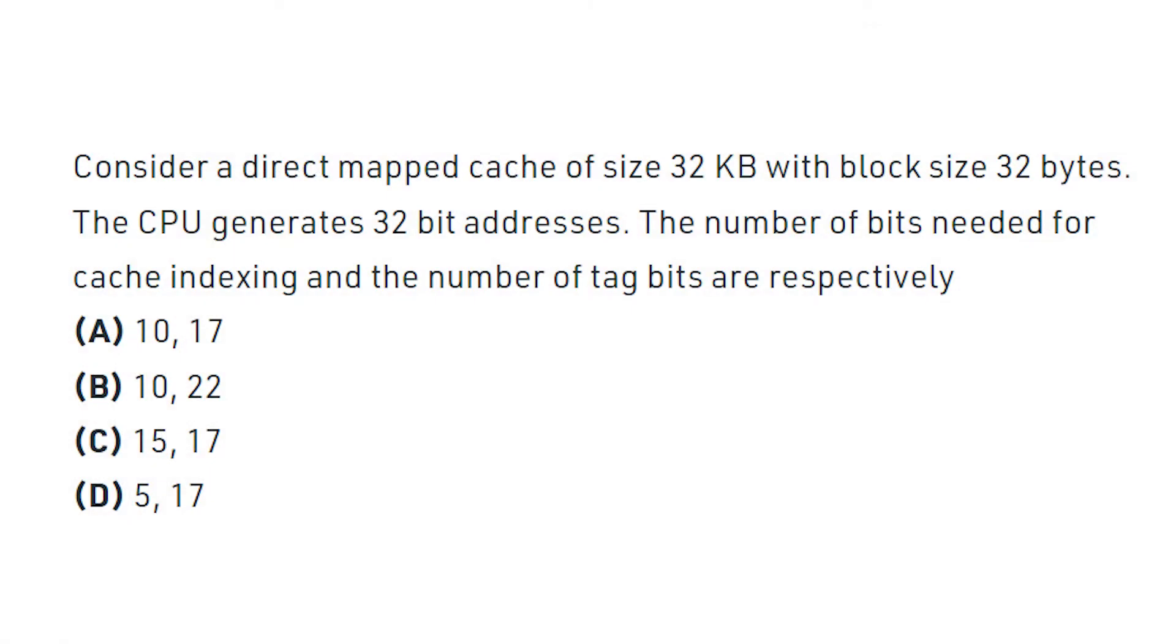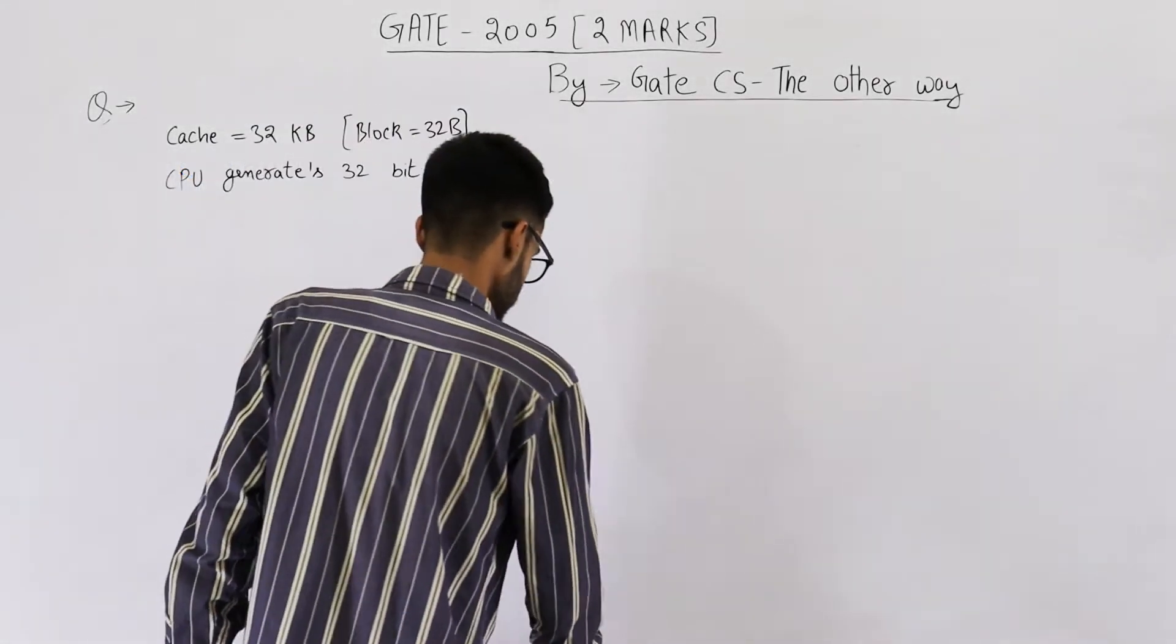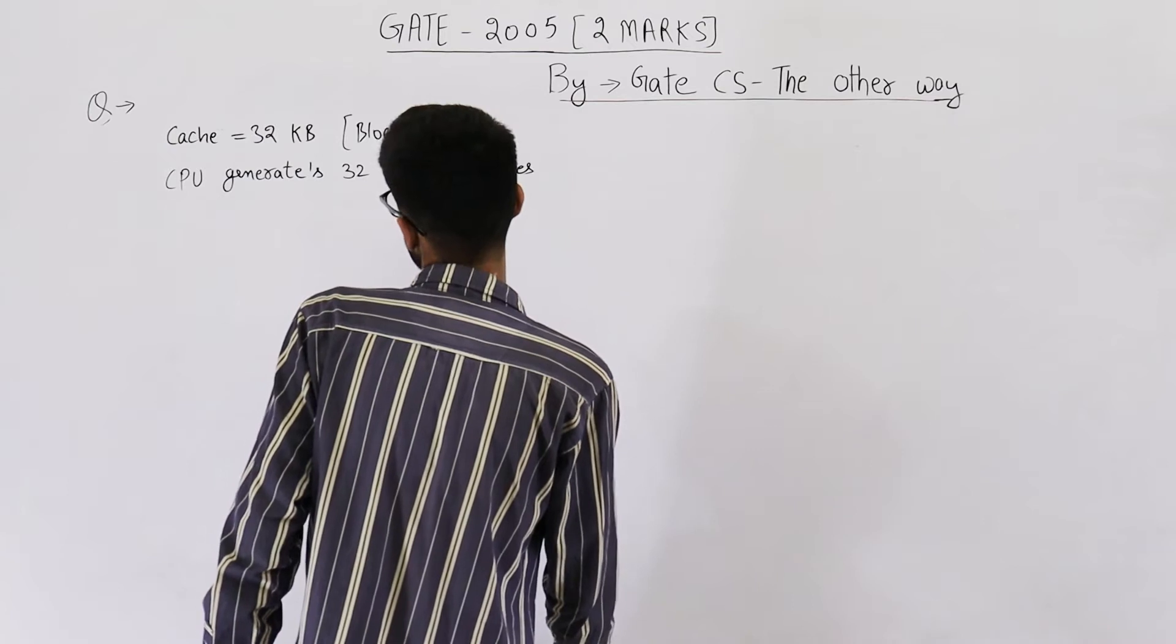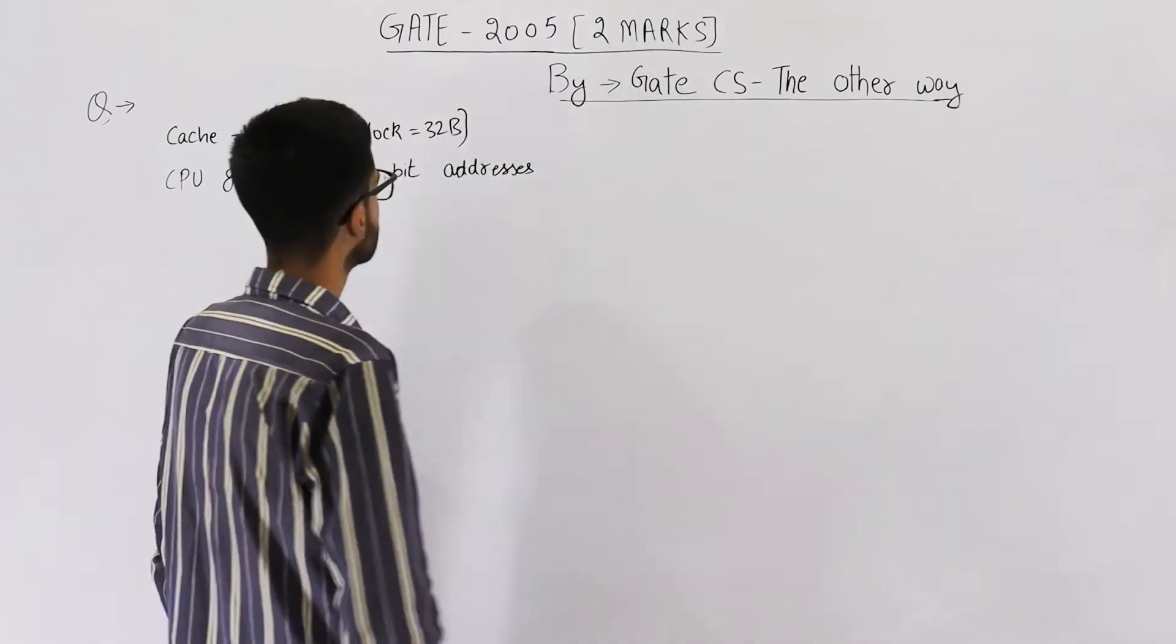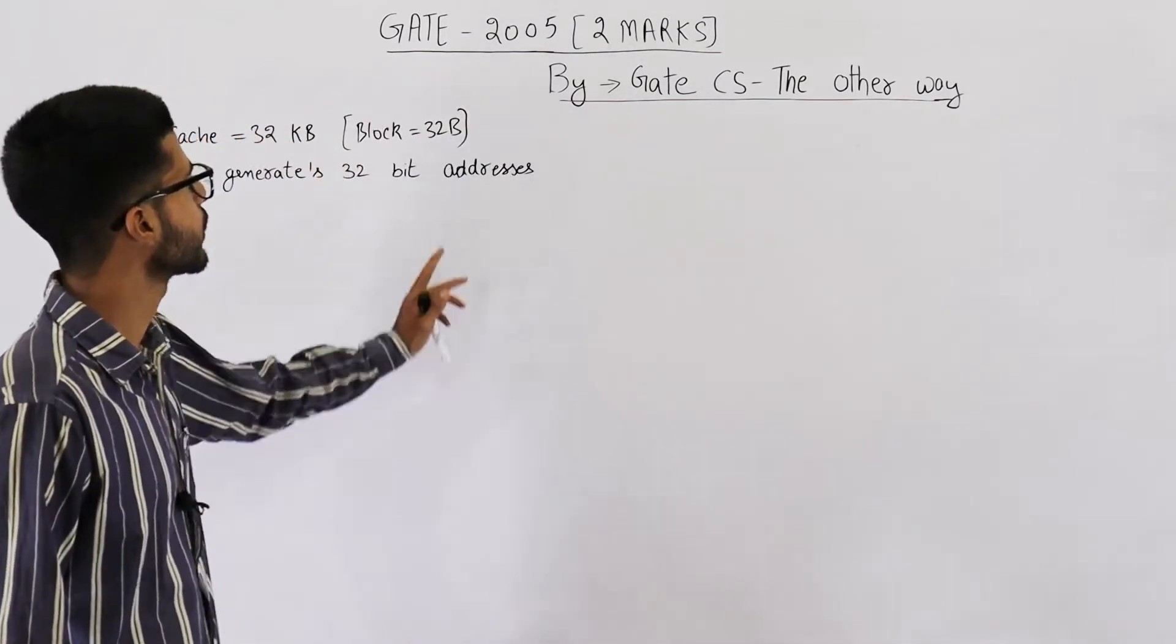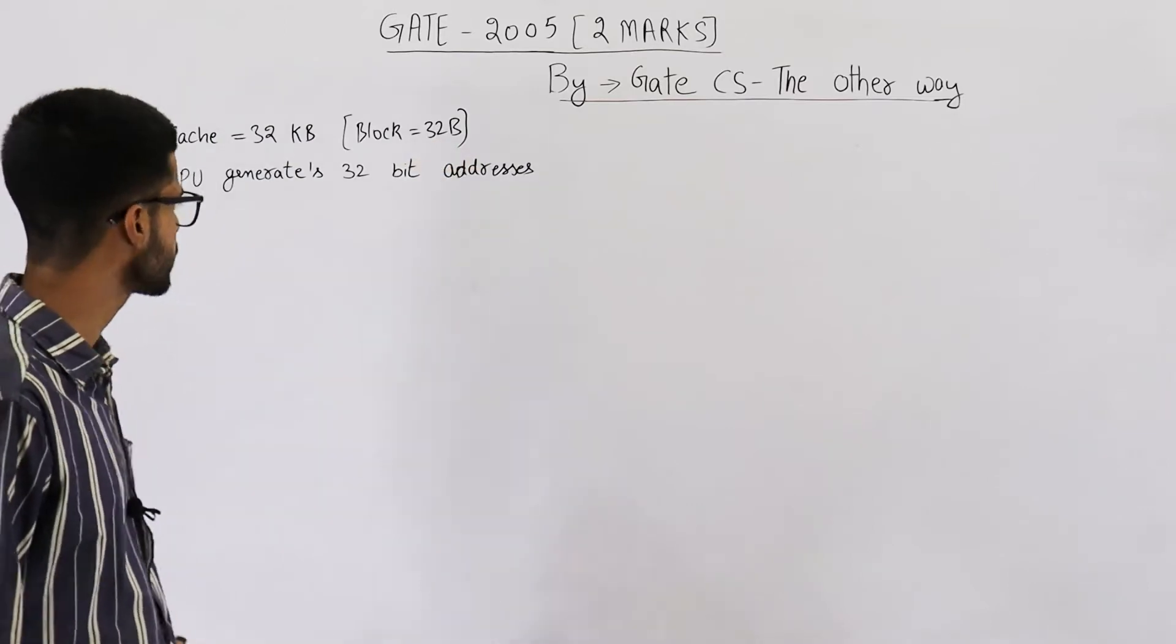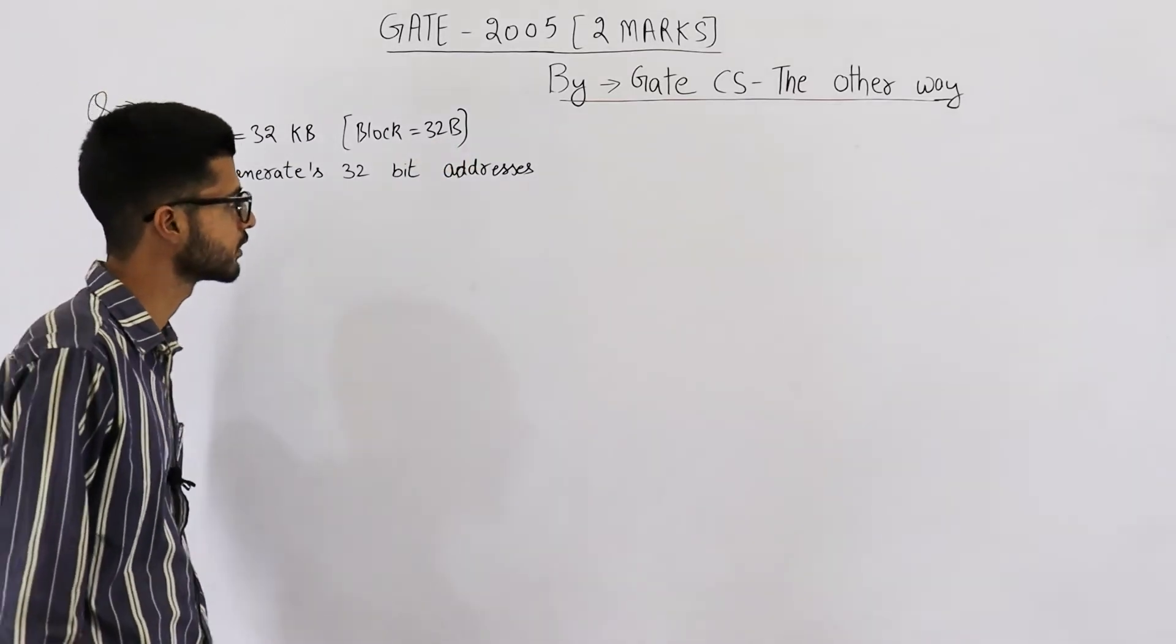Consider a direct mapped cache of size 32 KB with block size 32 bytes. The CPU generates a 32-bit address. The number of bits needed for cache indexing and number of tag bits are respectively. Now they're saying cache is 32 KB, also a block is 32B, as well as CPU generates a 32-bit address.